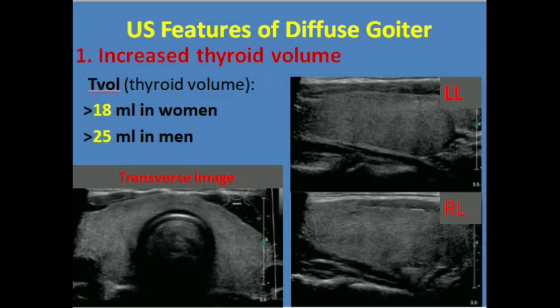The thyroid volume is different for women and men. For women, if it is more than 18cc or ml, it will be considered as diffuse goiter. For men, a volume of 25ml or more is considered to be enlarged.